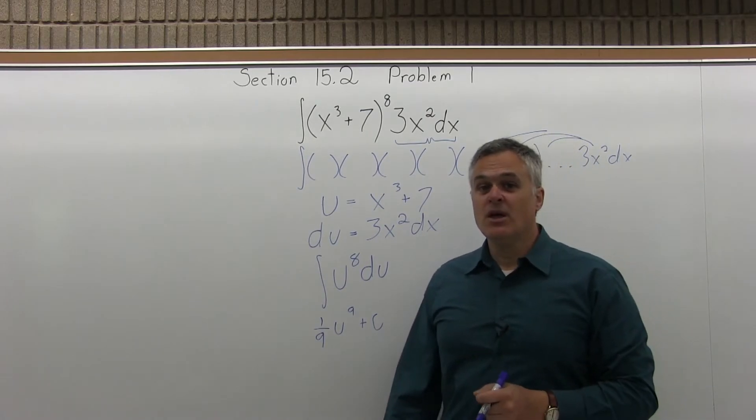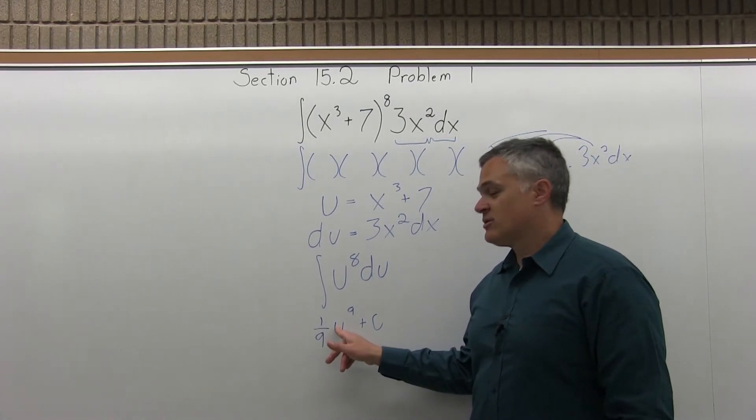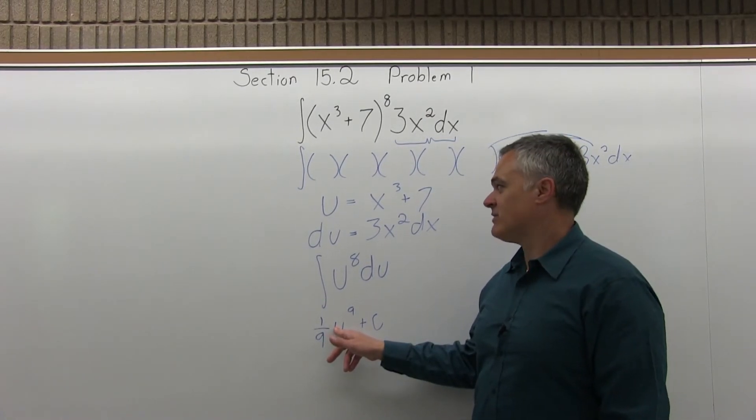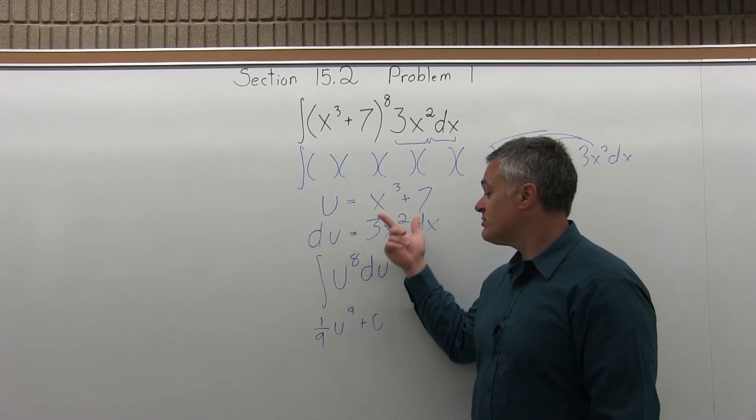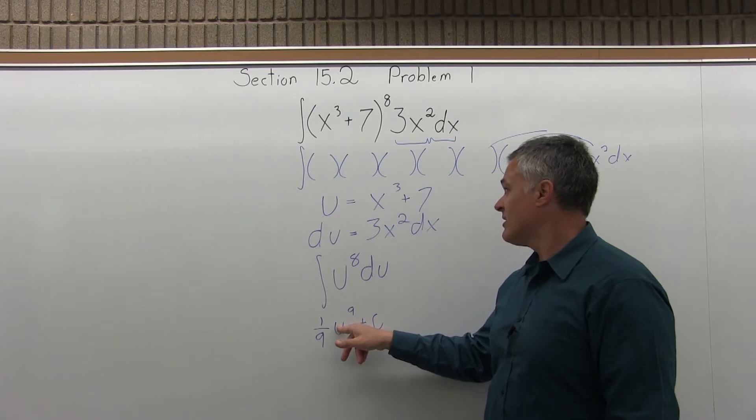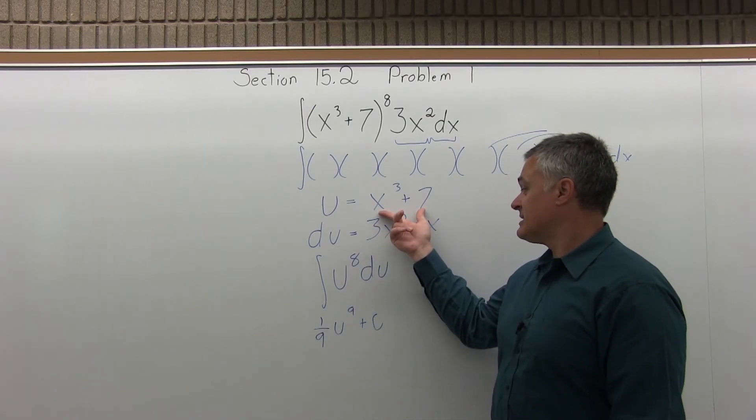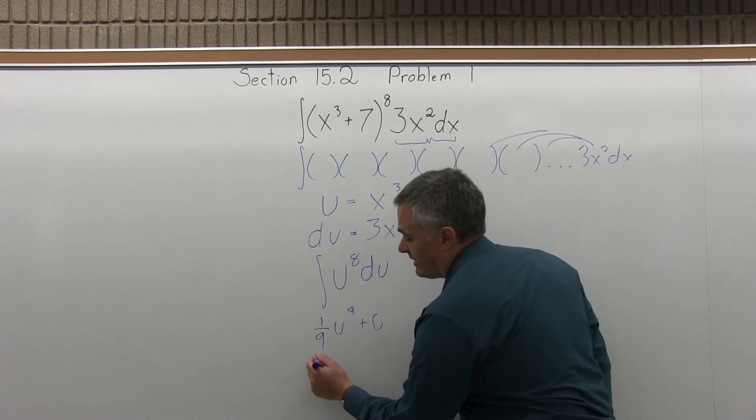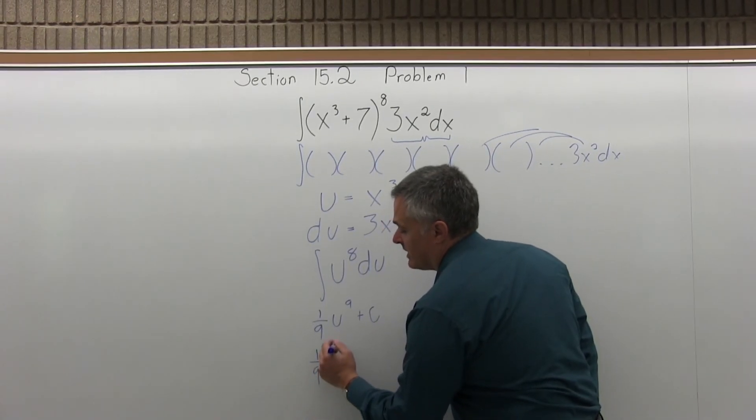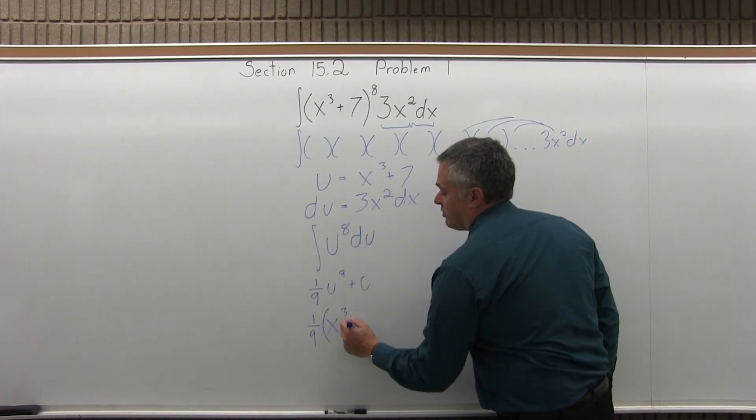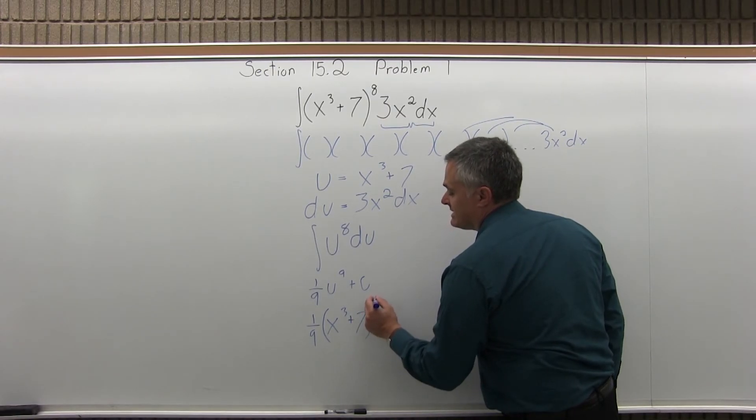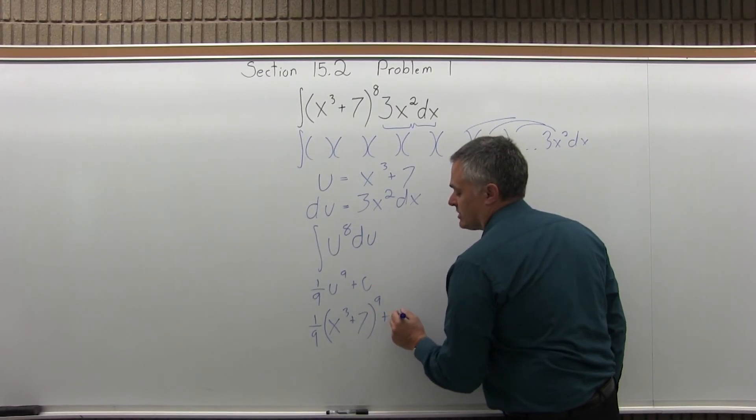But the problem is, it's expressed in terms of the wrong variable. What we have to do is write it in terms of the original variable x, which is pretty easy. Instead of u to the ninth, we'll put the x cubed plus 7 to the ninth. So don't forget, there's a 1 ninth in front, I'll keep it in front. Set up some parentheses inside the parentheses. x cubed plus 7, close the parentheses, ninth power, don't forget, plus a constant.